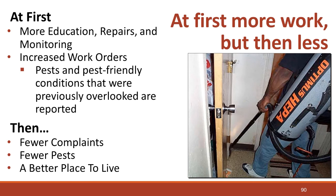IPM won't be successful if implemented half-heartedly. Property management will have to invest time and money to get caught up on repairs — but these repairs are essential to IPM and to protecting the building from the damaging effects of moisture. Once fixed, the building must be maintained. The Boston Housing Authority states that at the beginning of their IPM program, a lot of repair work was requested because unreported problems were finally reported. But then, as repairs were made and pests were controlled, they experienced fewer work orders than before the IPM program began.